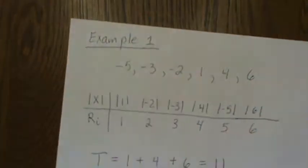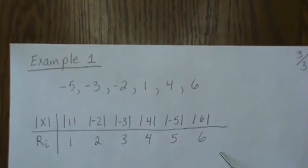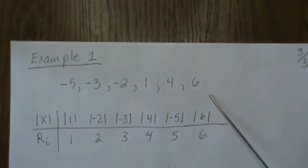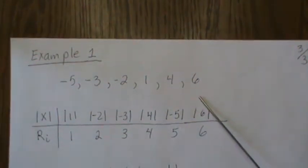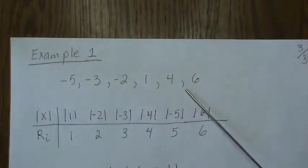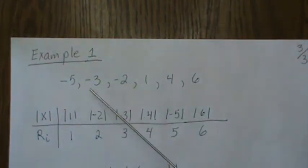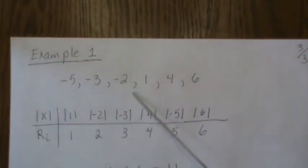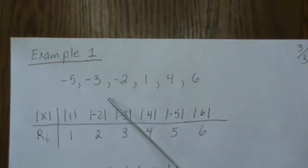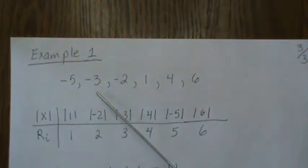Here's a quick example. If this is our data, and I have them in sorted order, we take the absolute value of each of them, and then we rank them. This is the smallest, and this, and that, and this, that, and that.